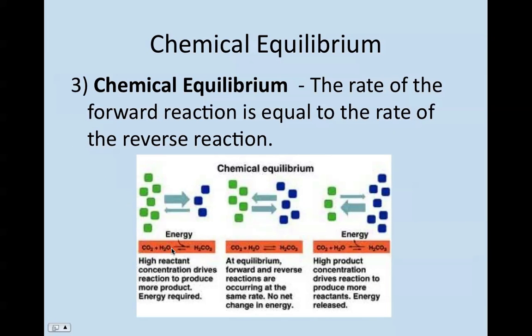And then finally, the one that we're going to be using a lot of is chemical equilibrium. The rate of our forward reaction has to be equal to the rate of the reverse reaction. Usually, initially, the forward rate is faster, but over time, as we make and produce more products, we'll have those rates become equal to each other.